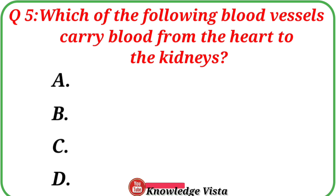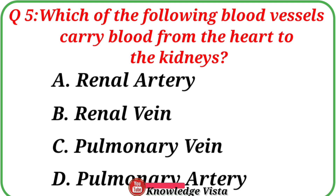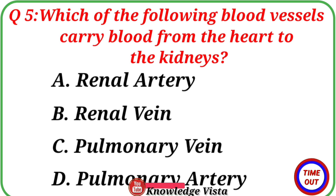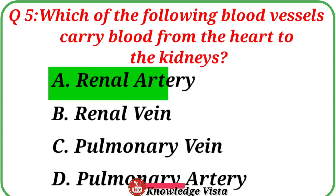Question No. 5. Which of the following blood vessels carry blood from the heart to the kidneys? Your options are: A. Renal artery, B. Renal vein, C. Pulmonary vein, D. Pulmonary artery. Correct answer is option A: Renal artery.